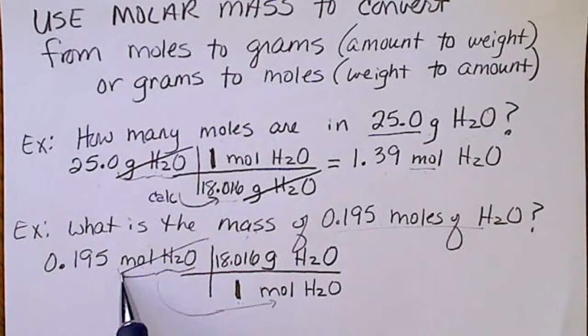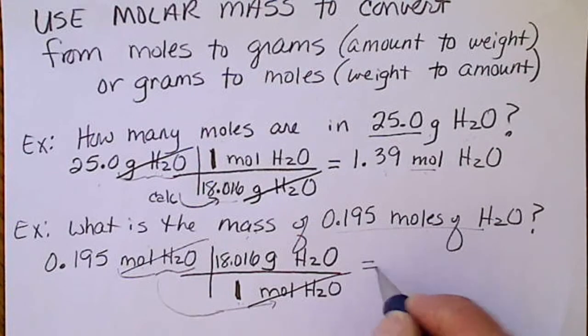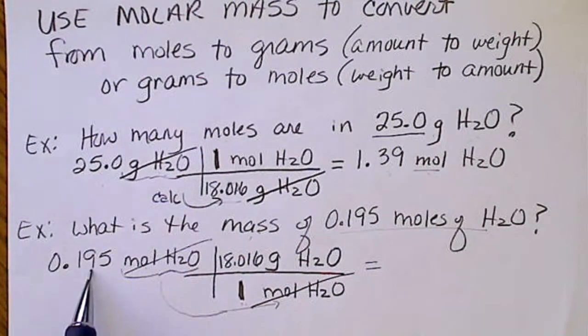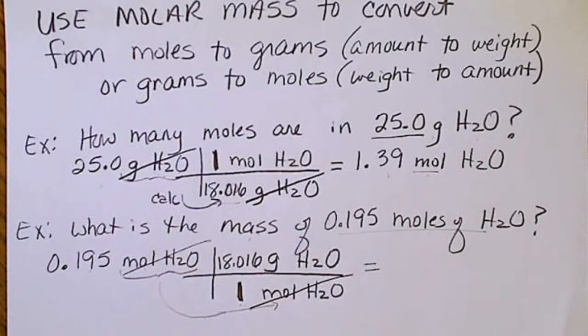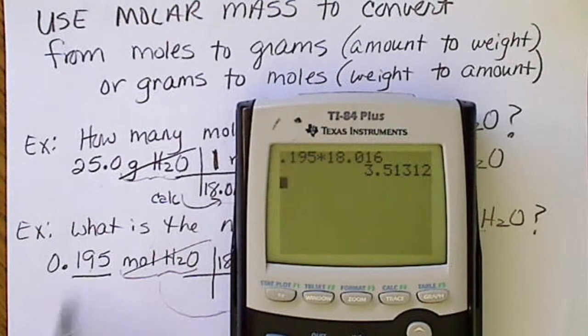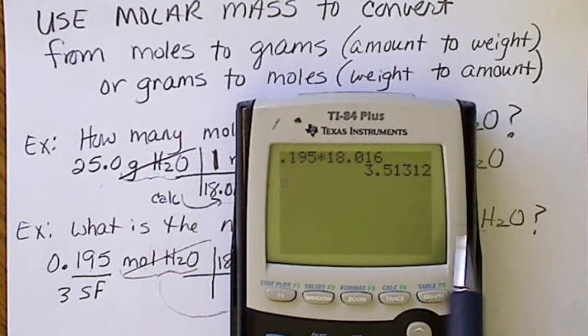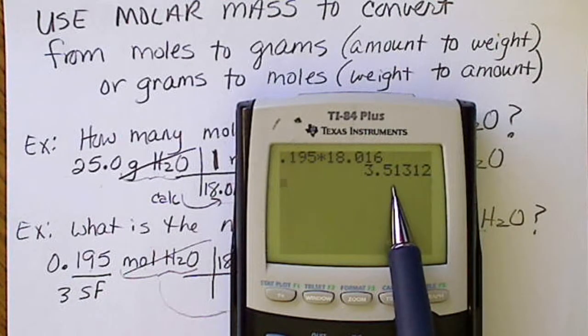So mole of water cancels mole of water. So this is going to be 0.195 times 18.016. And our given measurement here, we've got three significant figures, so we should round our answer to three significant figures.